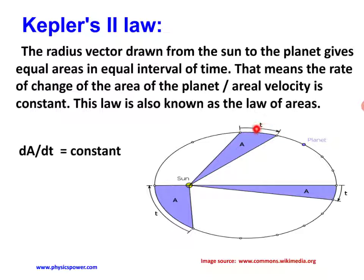That means, in a particular time interval, the radius vector from the sun to the planet sweeps out an area. In the same time interval, it sweeps an equal area elsewhere in the orbit. This is nothing but the rate of change of area being constant — the law of areas.